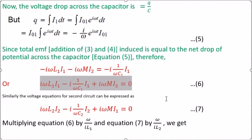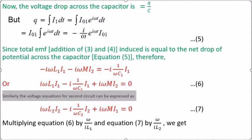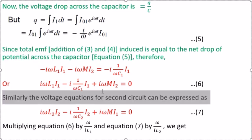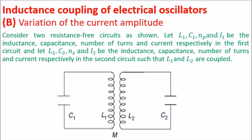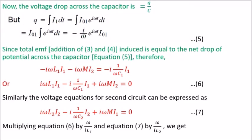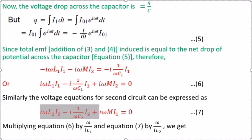Similarly, proceeding for the second coil, we write the voltage equation for the second circuit. The only change from equation 6 is that the subscripts 1 become 2, since we are now dealing with the coil having inductance L2 and capacitance C2. So equation 7 is: iota omega L2 I2 minus iota times (1/omega C2) times I2 plus iota omega M times I1 equals zero.